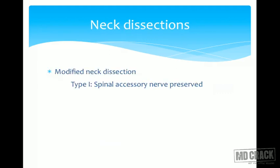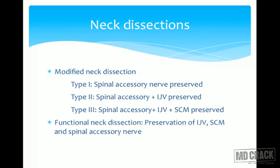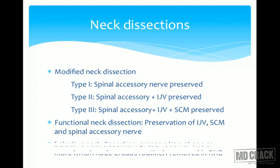Modified neck dissection is divided into three types. In Type 1, the spinal accessory nerve is preserved. In Type 2, the spinal accessory nerve along with the internal jugular vein is preserved. In Type 3, all three non-lymphatic structures — the spinal accessory nerve, internal jugular vein, and sternocleidomastoid muscle — are preserved. These can be asked as MCQs.